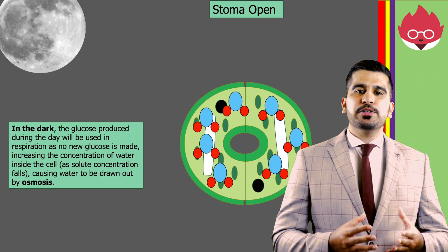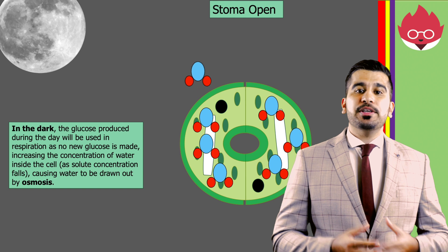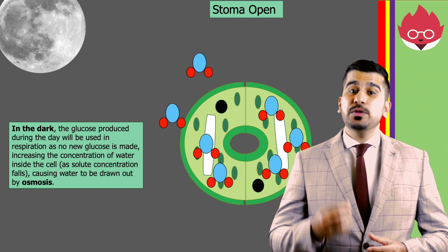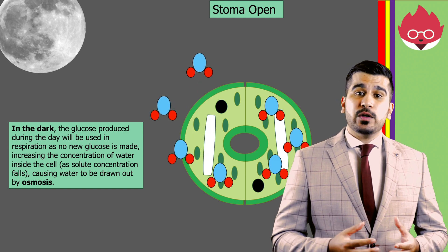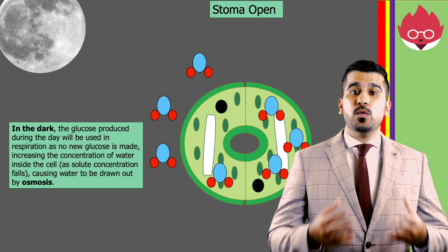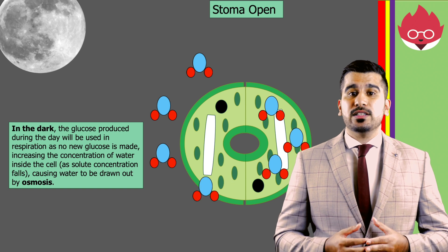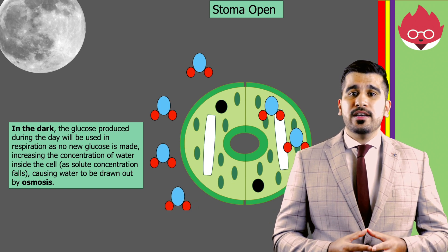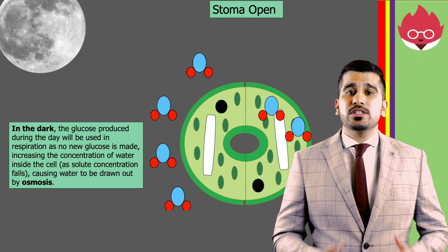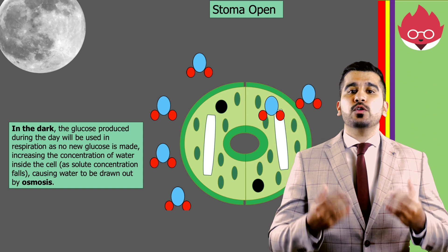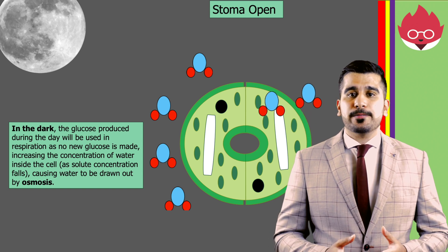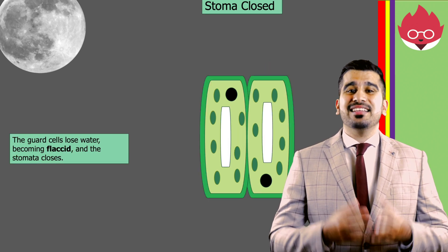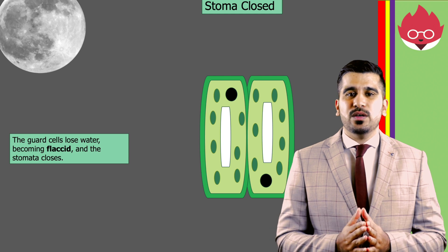In the dark, the glucose produced during the day will be used in respiration. As no new glucose is made, this increases the concentration of water inside the cells as the solute concentration falls. This causes water to be drawn out by osmosis. The guard cells lose water, becoming flaccid, and the stomata closes.